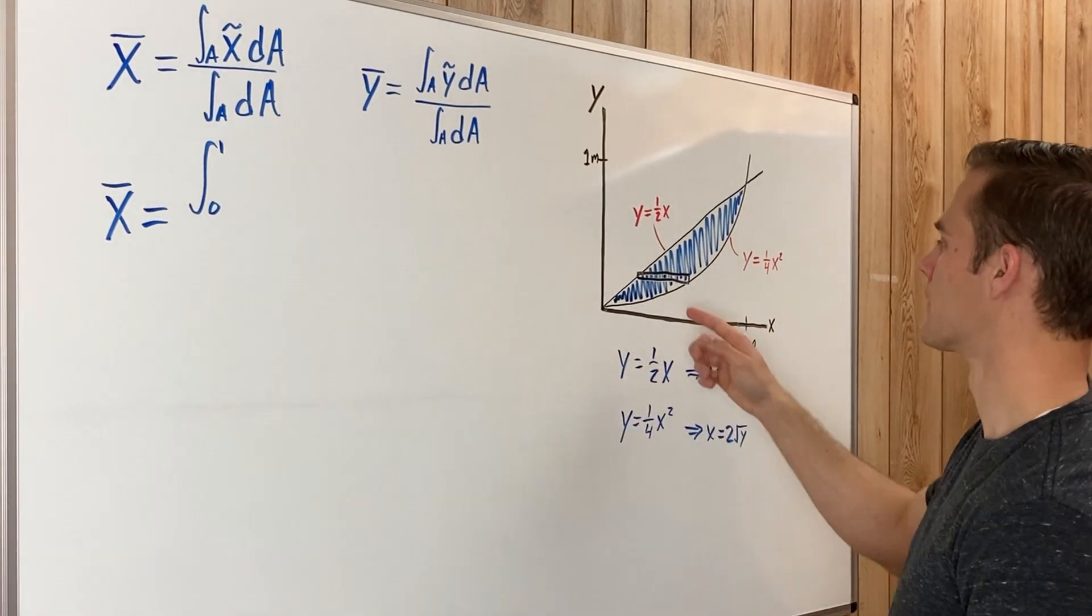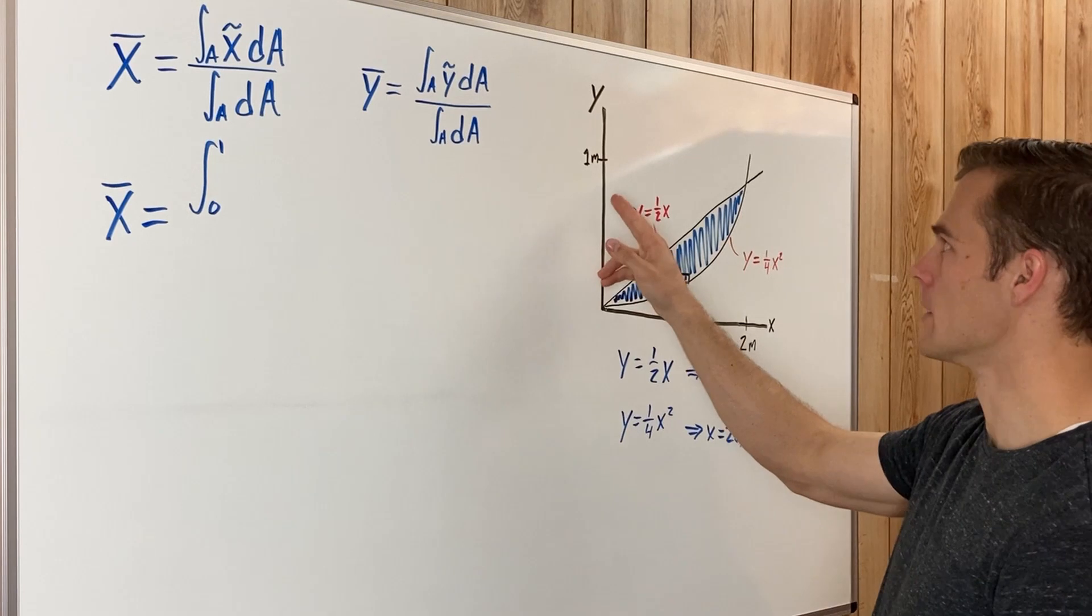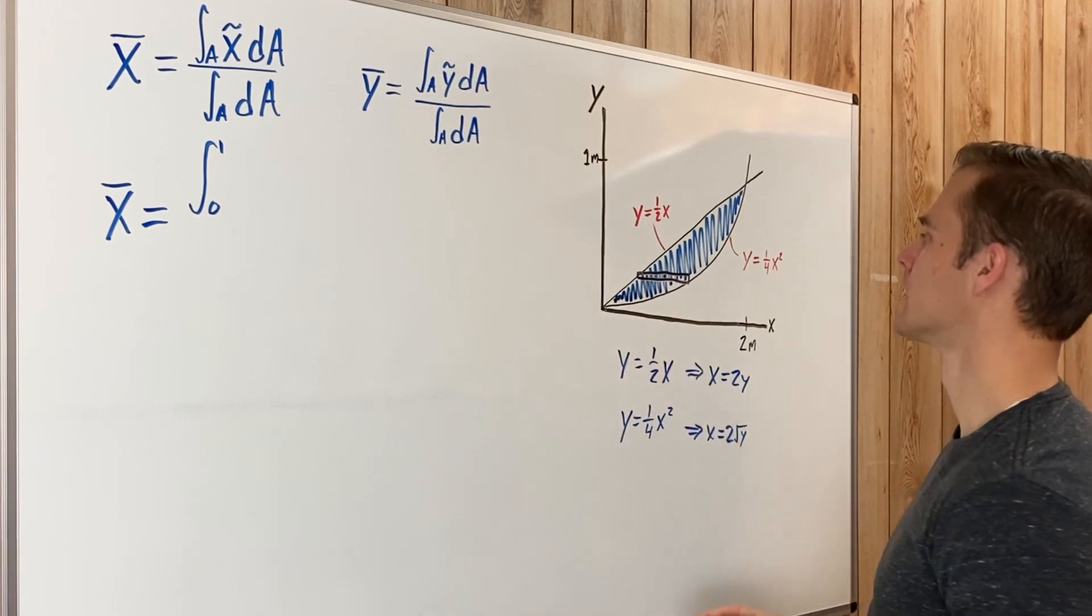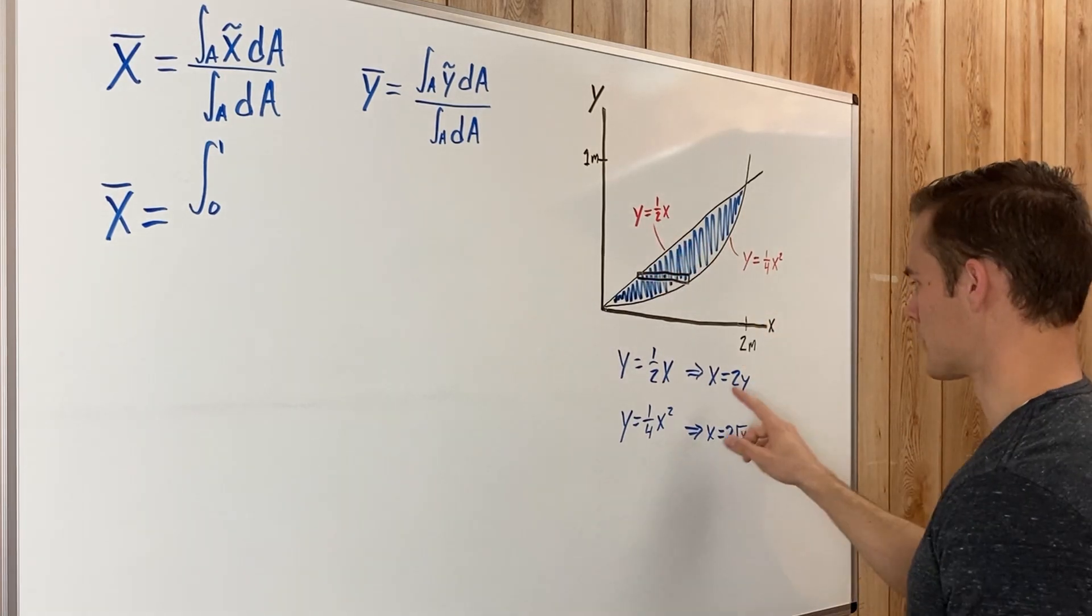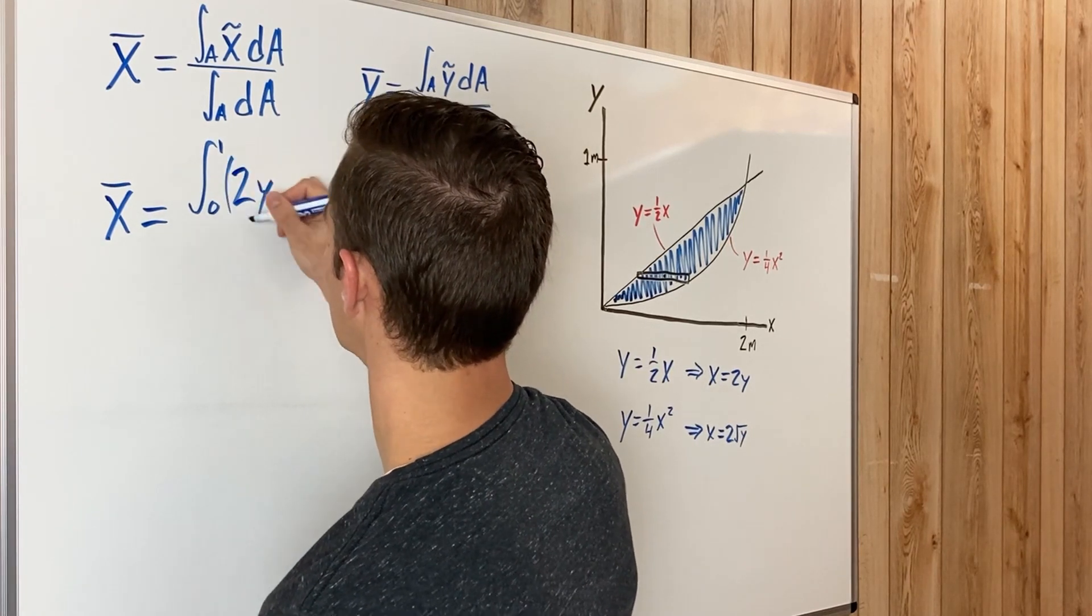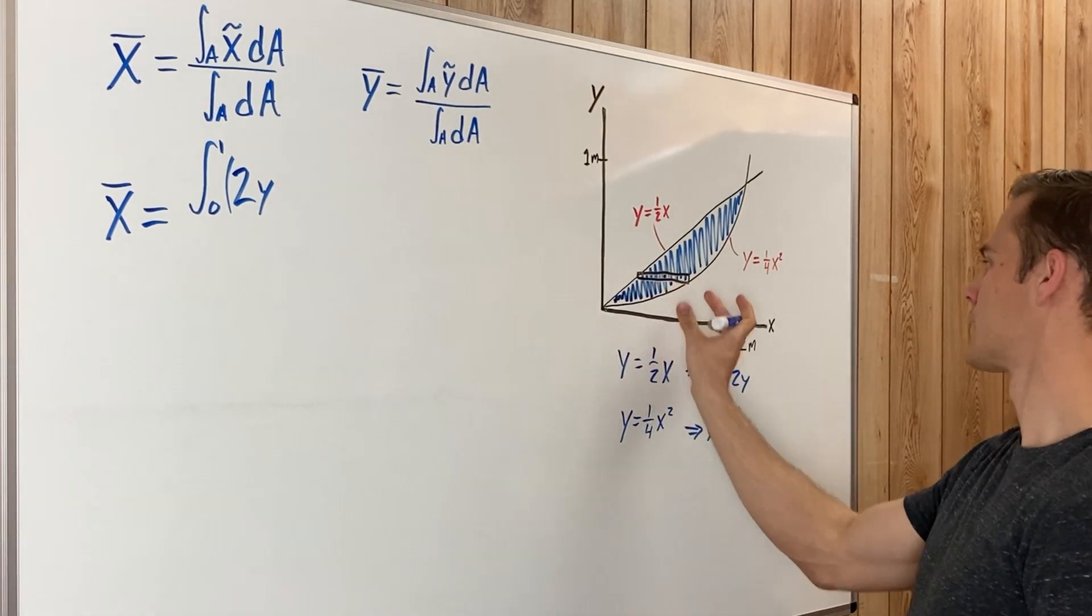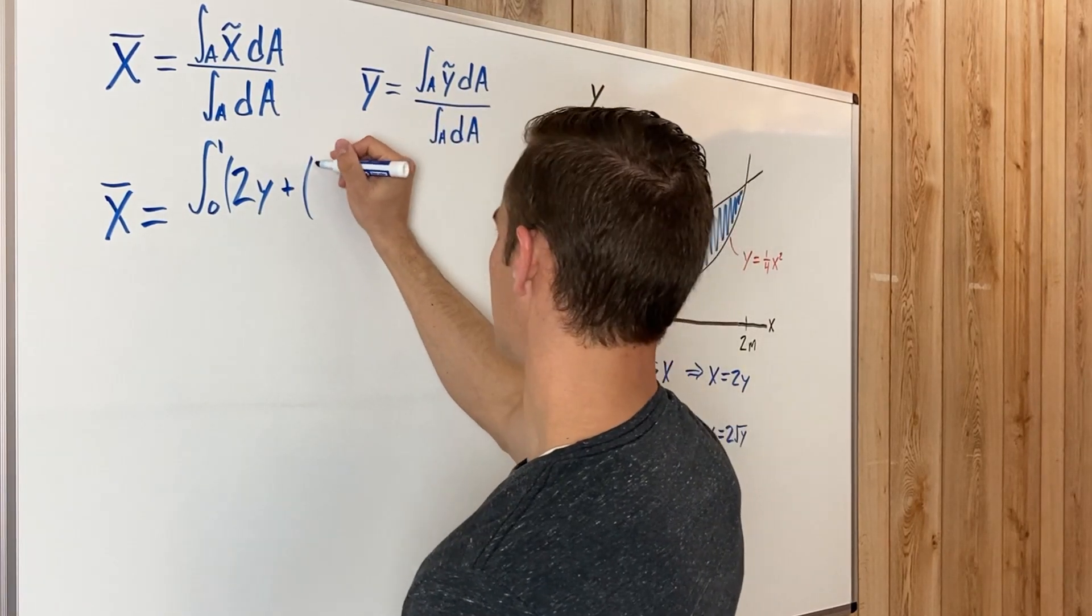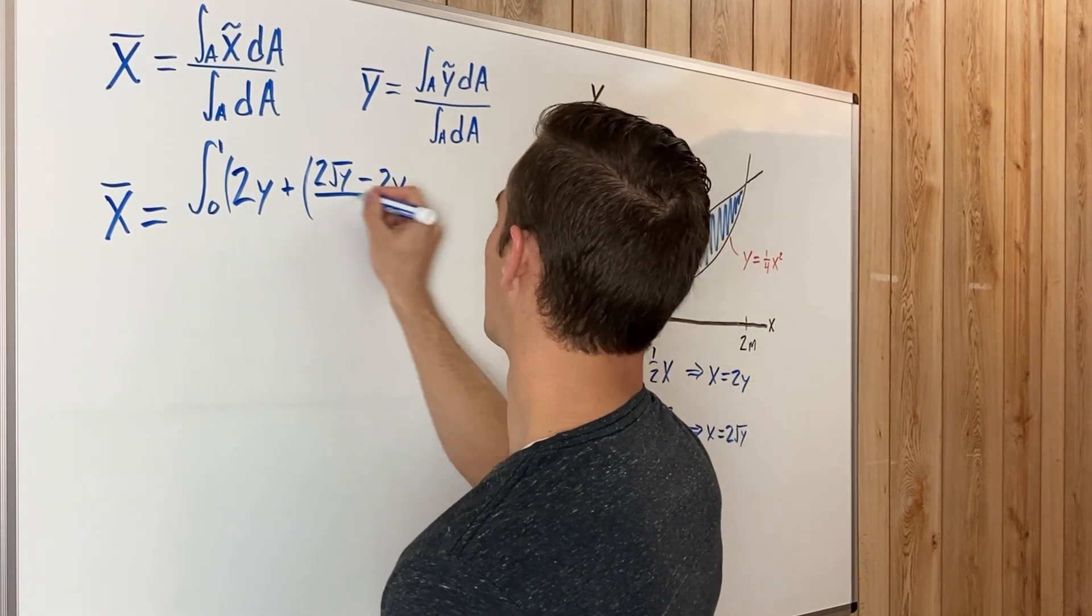So to find the midpoint between those two functions, we take the top one minus the bottom one and divide it by two. But from there we need to get all this space, because we need to find the X center of mass with respect to the Y axis. So we need this space plus this space. So this space is marked by the function Y equals one half X, or we solved it for two Y, so it's going to be two Y. We're going to put some parentheses around this two Y plus the halfway between these two functions.